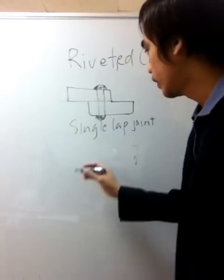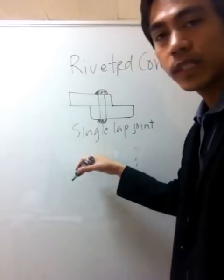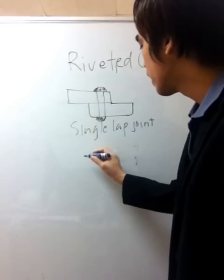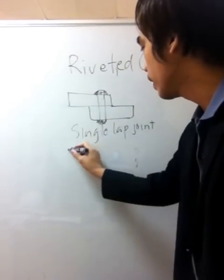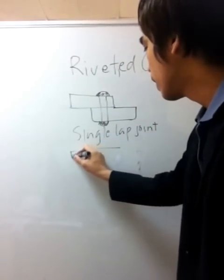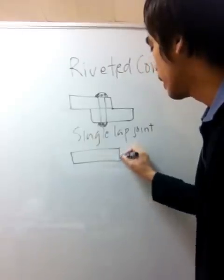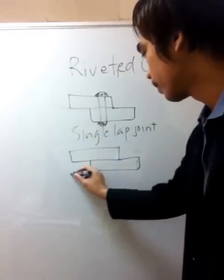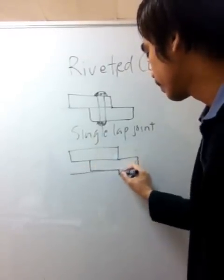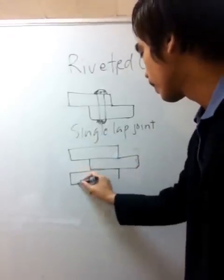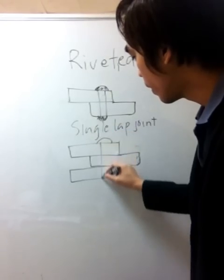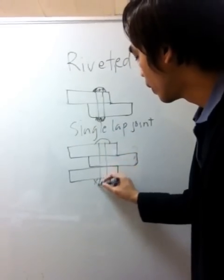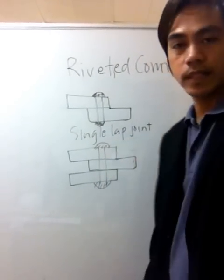The other one is the double-lap joint, in which two cover plates are joined to a main plate, and it is connected by bolts or rivets.